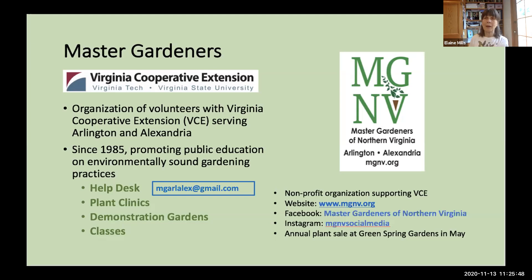The building is currently closed, but you can reach us at our email — MGArlAlex at gmail.com — for answers to gardening questions. During normal circumstances we also hold plant clinics at the Arlington Central Library and many farmers markets. We have a number of demonstration gardens in Arlington and Alexandria — see the locations on our website, mgnv.org.